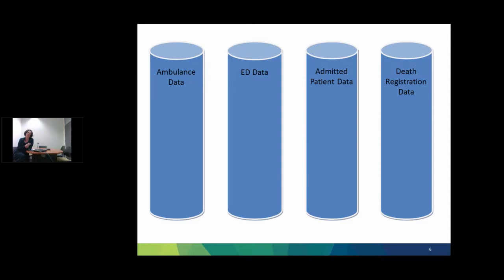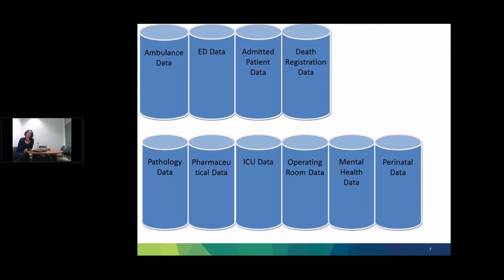For example, within any given hospitalisation or hospital event, we might have ambulance data, emergency department, admitted patient data, and for some people death registration data. Currently, particularly where you're looking across hospitals, there's no unique identifier to join that information together. And within any given hospitalisation, you'll have more data collections sitting in isolated silos — pathology, pharmaceuticals, intensive care unit, operating room, mental health, perinatal data, to name a few.